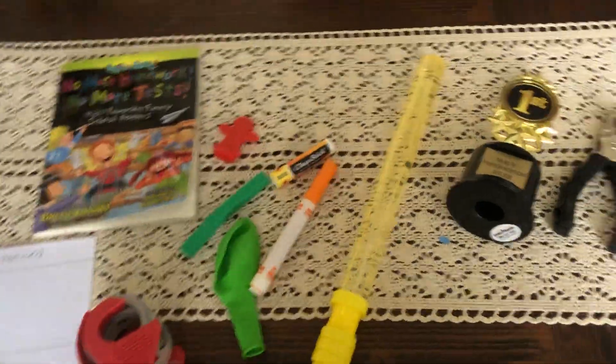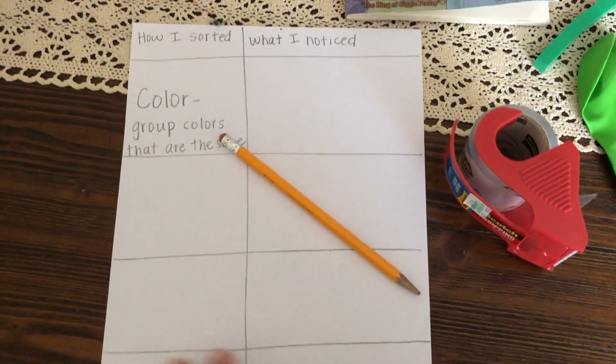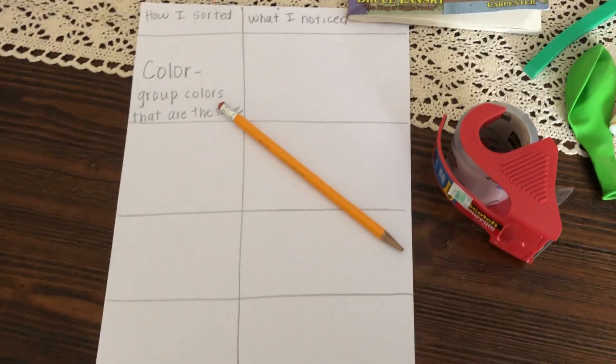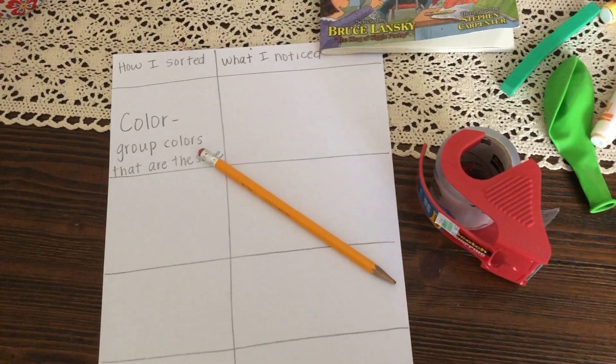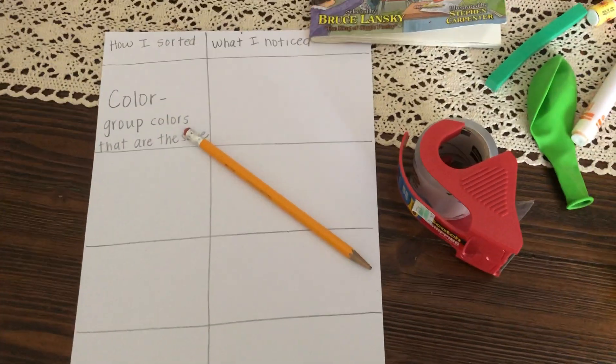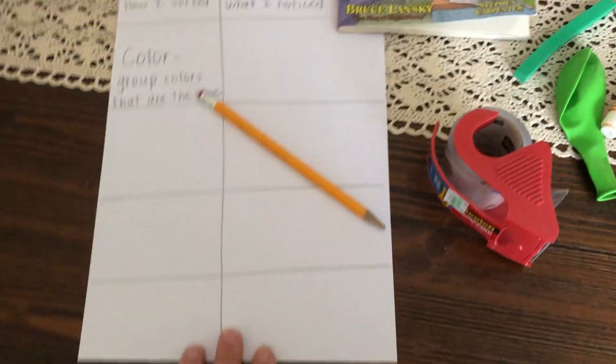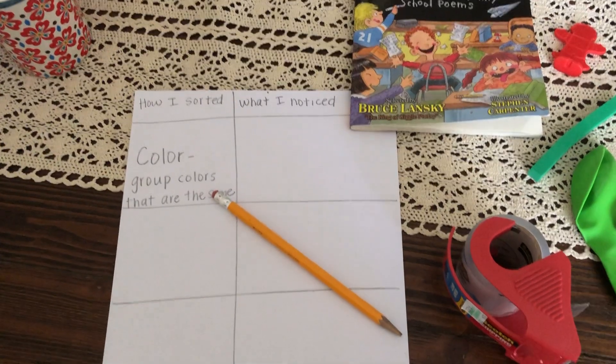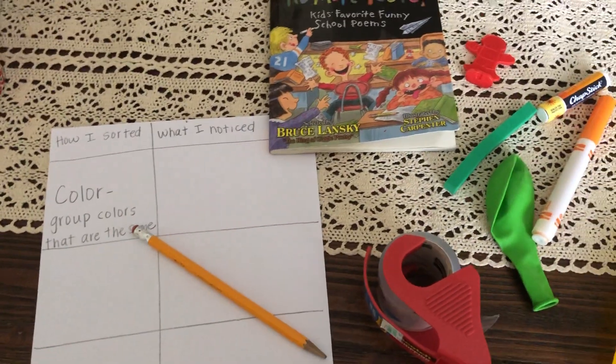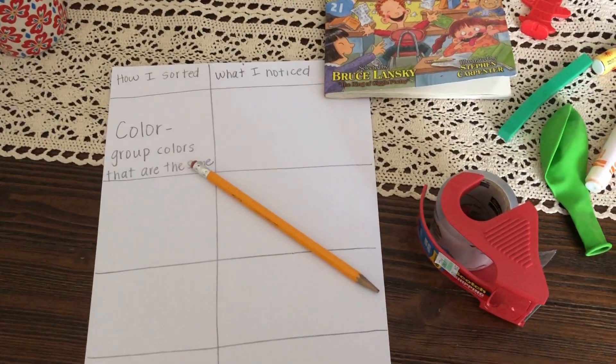I've gathered my 10 items and what I'm also going to need for this activity is a chart. You can make this chart on a piece of paper or in a journal for your science journal. What you're going to do is make two columns. One column is where you write down how you sorted objects. The other column is where you write down what you notice after you sort the objects.